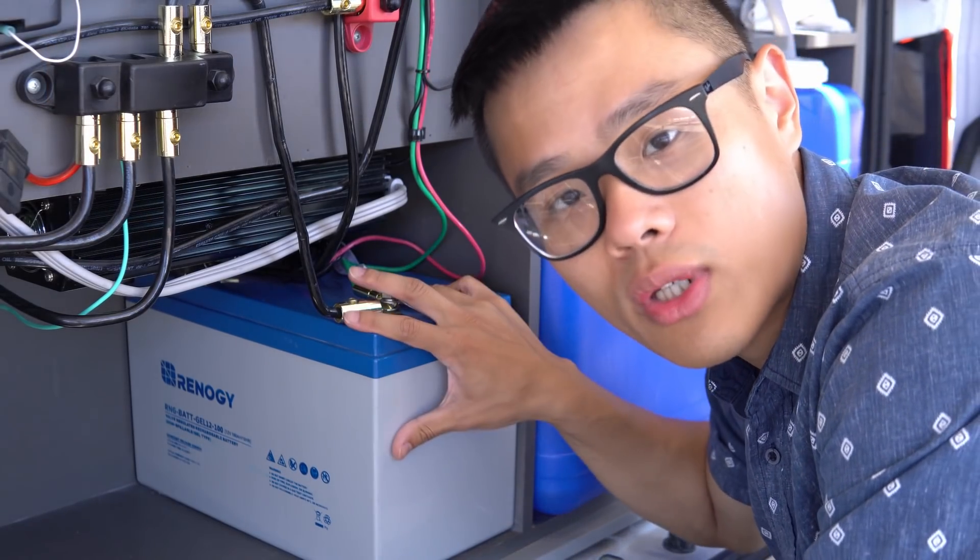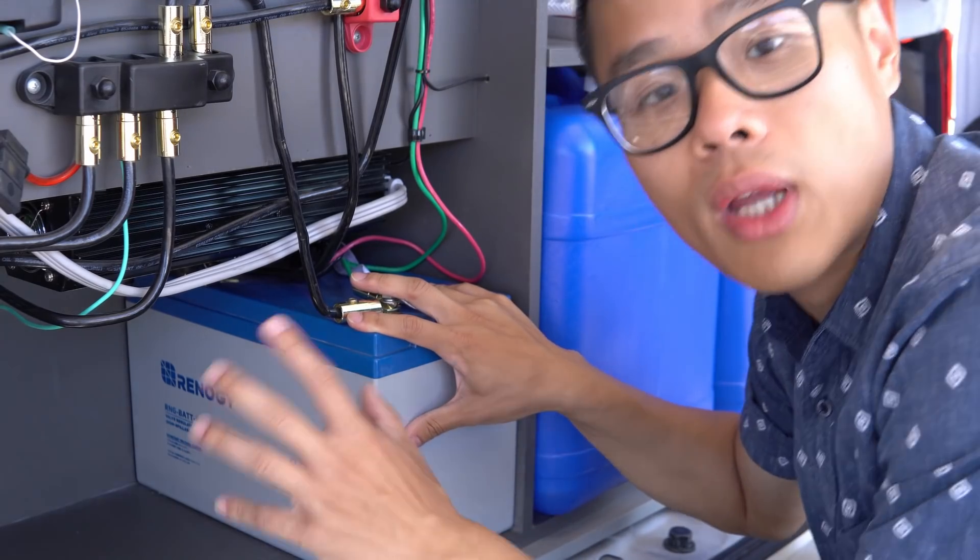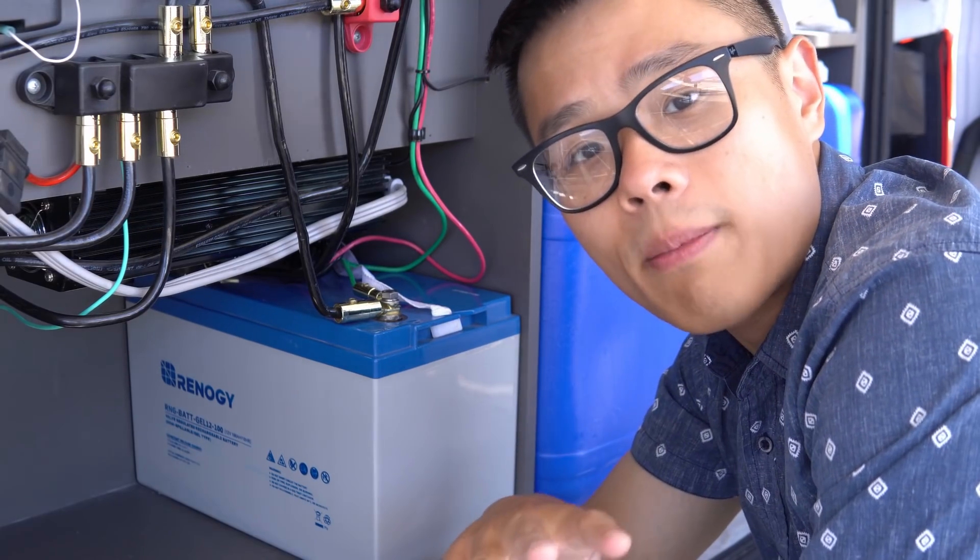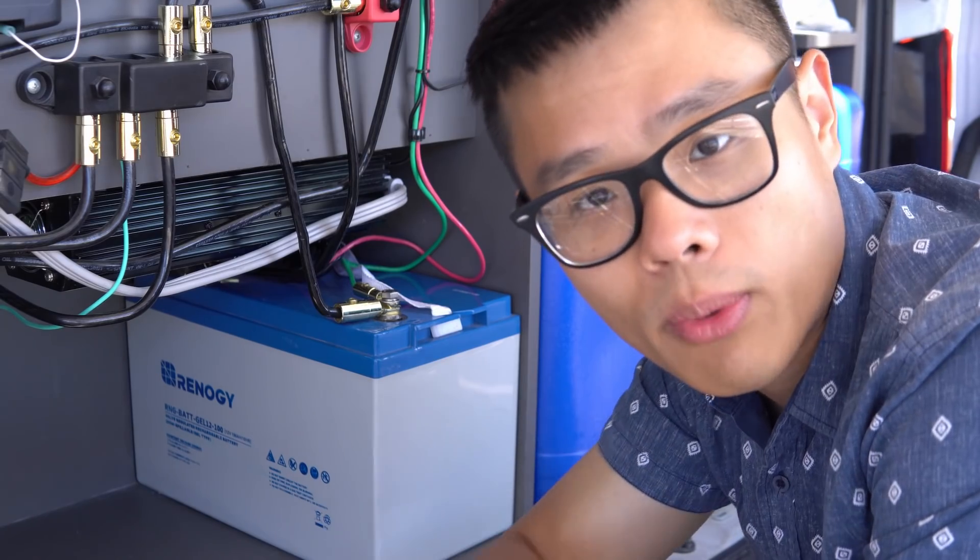This one in my Nissan NV200 is a 100Ah 12V pure gel lead acid and at this point I've gotten used to its limitations. It's been reliable but I don't expect much from it. Lithium batteries on the other hand outperform lead acid in almost all aspects and it's the batteries I used in my Sprinter build.